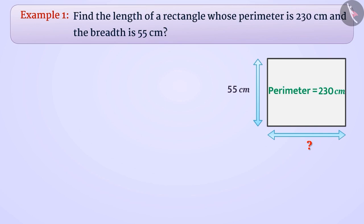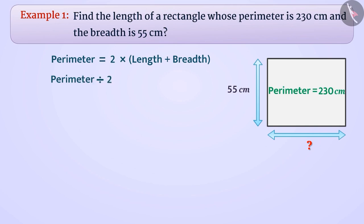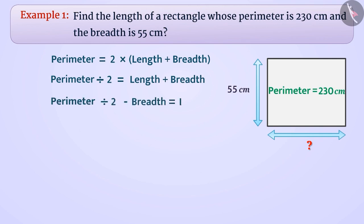We know that the perimeter of a rectangle is equal to 2 into length plus breadth. The perimeter of the rectangle divided by 2 is equal to length plus breadth. Since we have to find the length, we write it as: perimeter of the rectangle divided by 2 minus breadth is equal to the length.